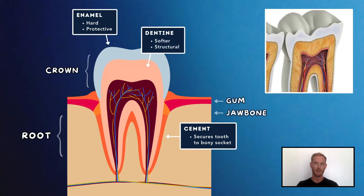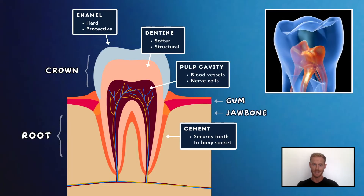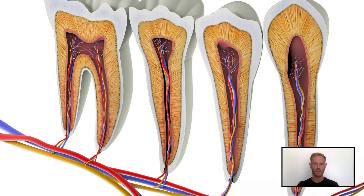Below the enamel is a layer of dentine, a softer substance that reinforces the enamel and helps to support the structure of the tooth. Inside the dentine is a pulp cavity, containing blood vessels and nerve cells. The nerves help to control the amount of force used when you chew, while the blood vessels supply oxygen and nutrients, which are essential for the general health and maintenance of the tooth.